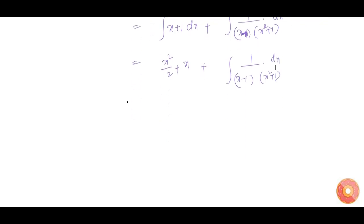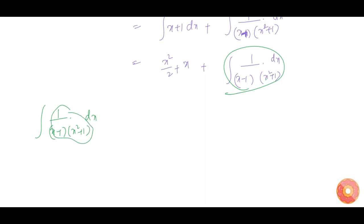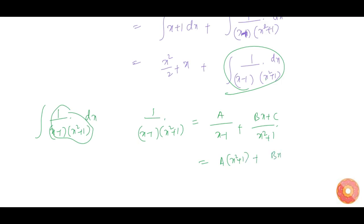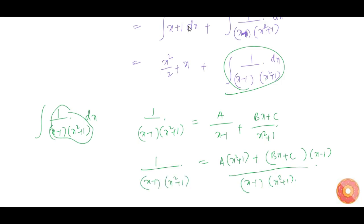Now I am going to solve the second part of this equation: integration of 1 divided by (x minus 1) into (x squared plus 1). We decompose this as A divided by (x minus 1) plus (Bx plus C) divided by (x squared plus 1), which equals A into (x squared plus 1) plus (Bx plus C) into (x minus 1), all over (x minus 1) into (x squared plus 1), which equals 1 divided by (x minus 1) into (x squared plus 1). Now equate the numerators.